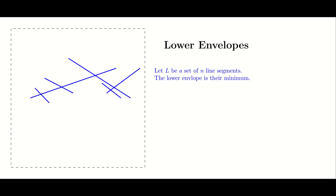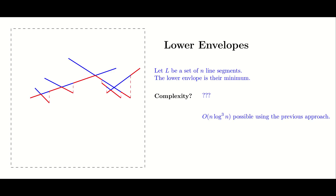If we look at even more complicated objects such as line segments, the previous proof no longer works, and it becomes more difficult to estimate their complexity. It is possible to prove a similar bound relatively easily by extending the previous approach and considering more cases, but better bounds remain inaccessible for now. This will be the motivation to look at the next topic in this series.